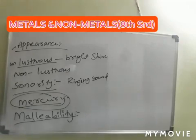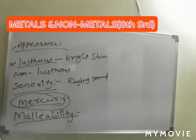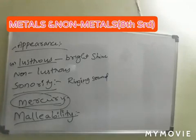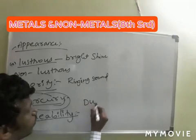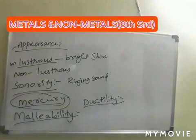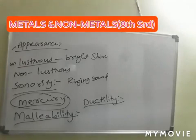Malleability is one property of metals. Metals like aluminum, silver, and gold are highly malleable. The next property is ductility. Some materials can be drawn into wires and some cannot. The property of drawing a material to make fine wires is called ductility.